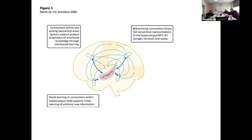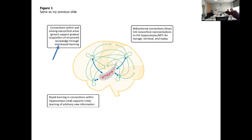This is the first figure in the paper, essentially representing the same ideas I just described. The green arrows show parts of the cortex talking to each other — gradual acquisition of structured knowledge. The red arrows are in the hippocampus — fast learning of arbitrary new information. The blue arrows are bi-directional links between cortex and hippocampus for learning and replay. Not a very useful drawing.